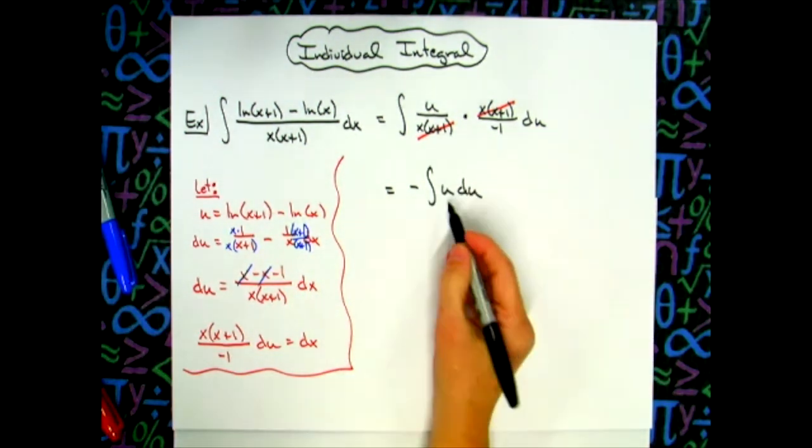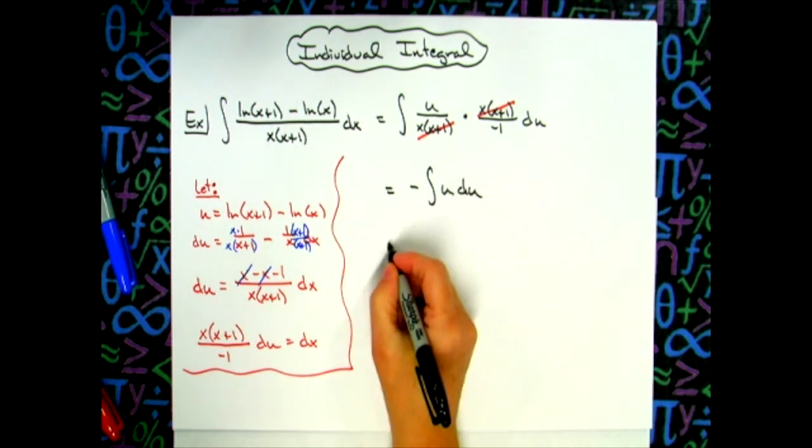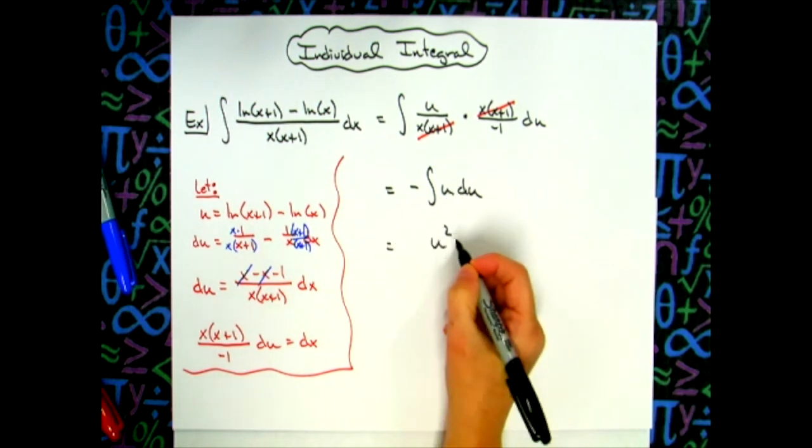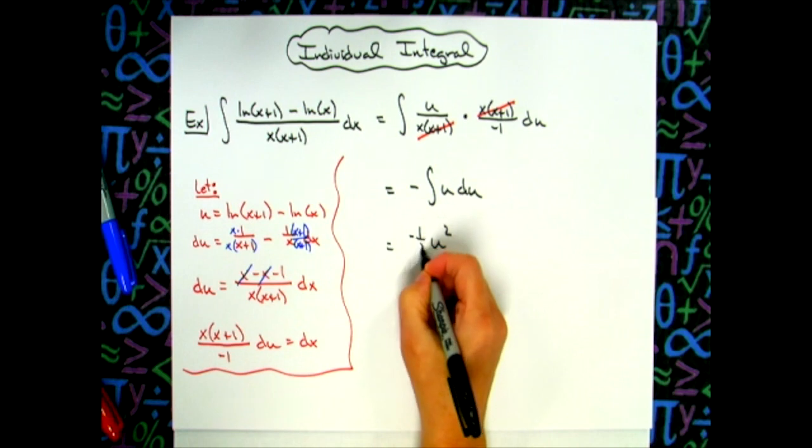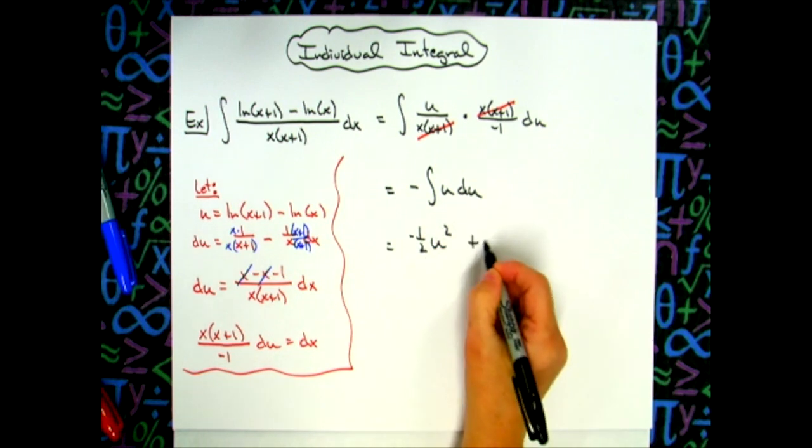Now, very simple to integrate. That's just a plain u. We'll add one to the exponent. So we'll have a u squared with that negative 1 half in the front. And we got to remember to add the plus c.